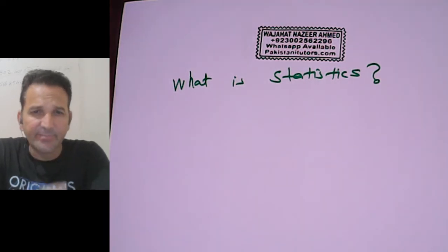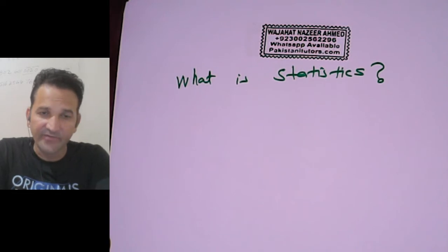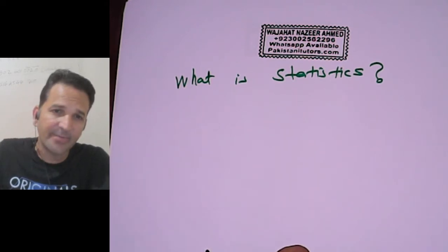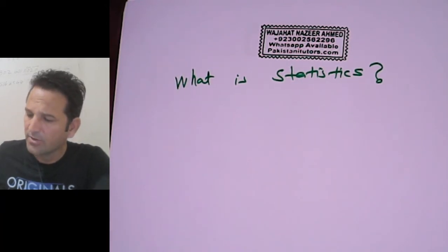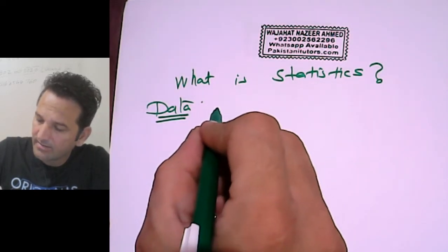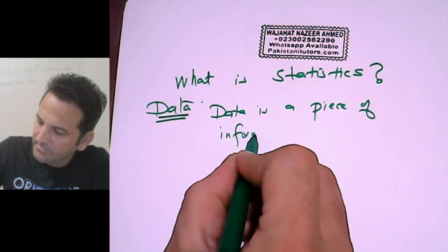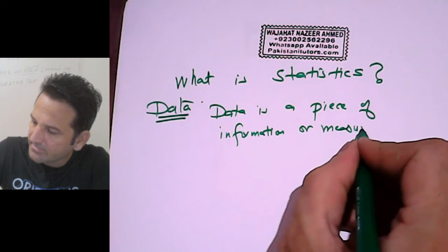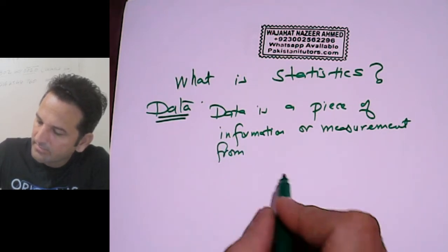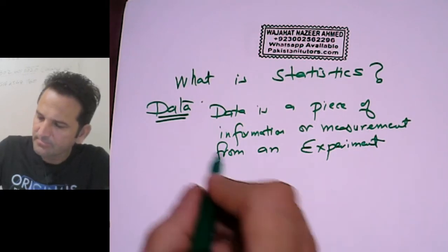According to some people, statistics is a branch of mathematics, but it is in a development phase. One day statistics will be a different subject and will not be treated as a branch of any subject. But till date, 2017, statistics is treated as a branch of mathematics. To understand statistics, we have to understand data. Data is a piece of information or measurement which we get from an experiment.